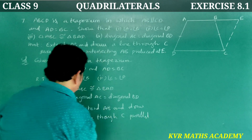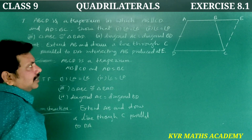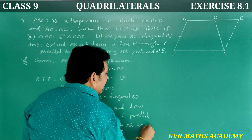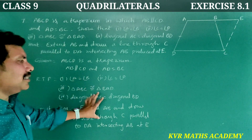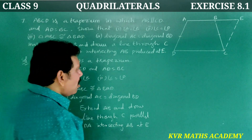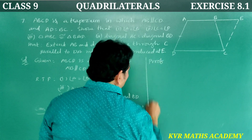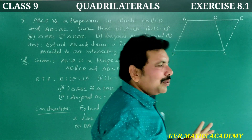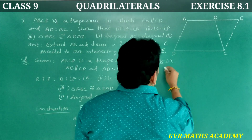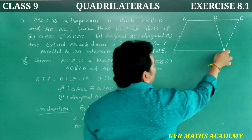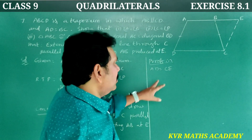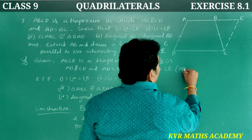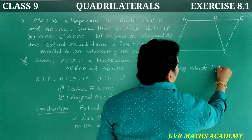Construction: extend AB intersecting at E. Now for the proof. Since ADCE is a parallelogram, AD is equal to CE — opposite sides of a parallelogram.